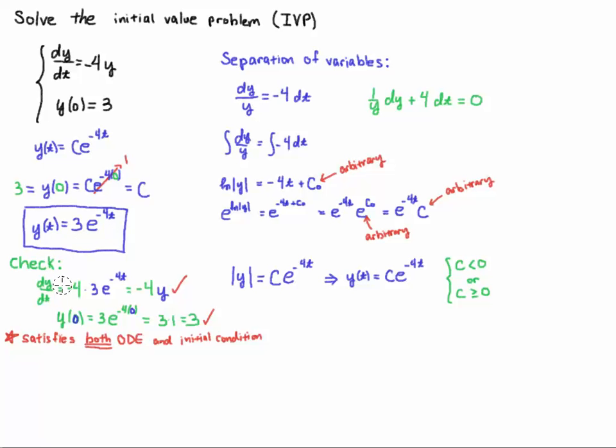So dy/dt is equal to the minus 4 from the exponent drops down and I have 3 e to the minus 4t but 3 e to the minus 4t was y so I just put that back and check I have the differential equation. But when you have an initial value problem you have an initial condition you should also double check that, that's a sanity check.